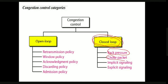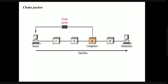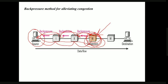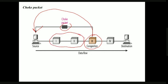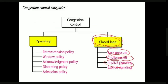The second closed loop technique is the choke packet. Unlike back pressure where notification travels hop by hop through upstream nodes, a choke packet is sent directly from the congested node to the source, avoiding the delay of traveling through intermediate nodes.